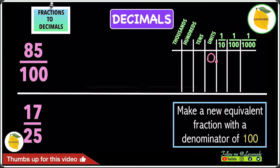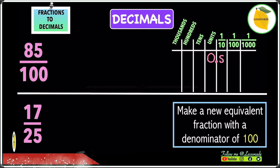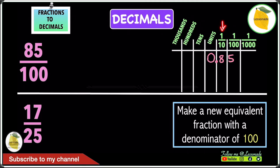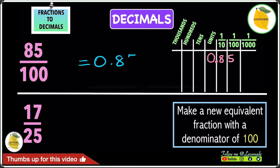You might wonder whether to write 85 in the hundreds column as one number — but you do not write it like that. Instead, you write 8 in the tenths column and 5 in the hundredths column. This means the answer is 0.85.